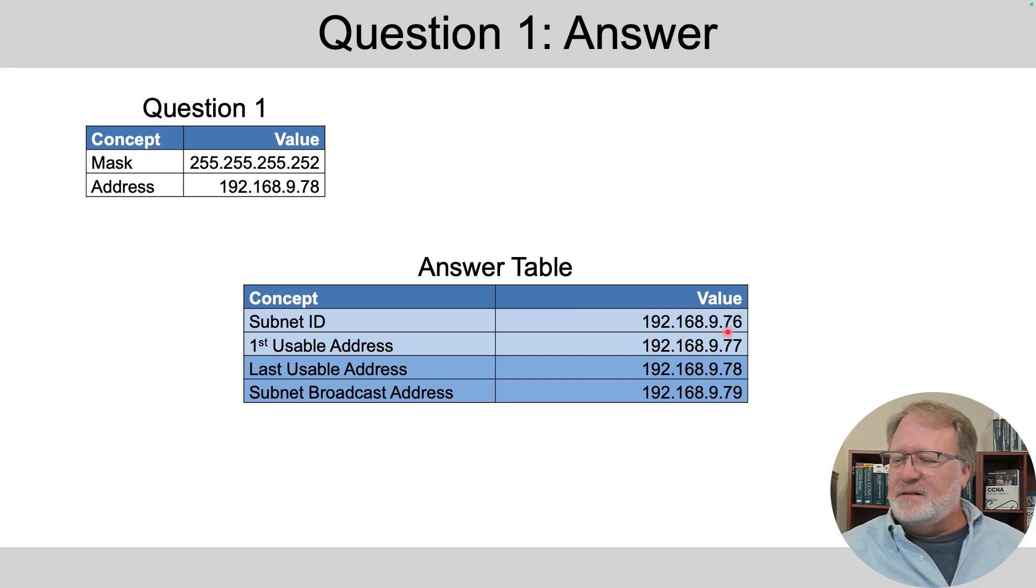Subnet ID ends in .76, first address 77, last address 78, and the subnet broadcast address is 79. How did we figure that out? Let's walk through it if you're interested.